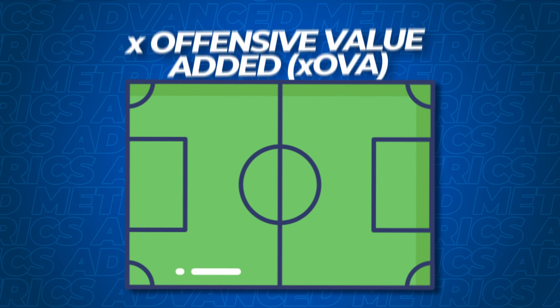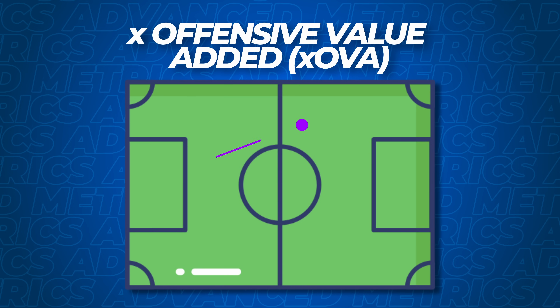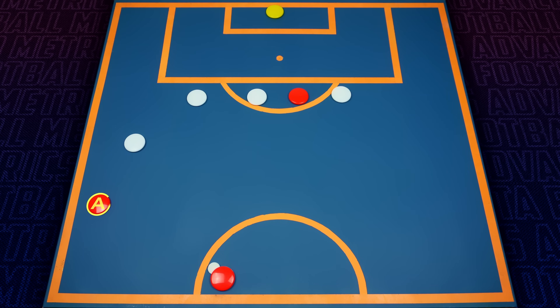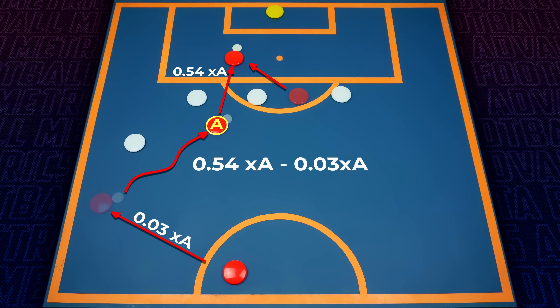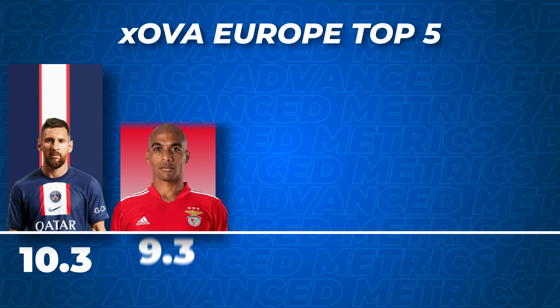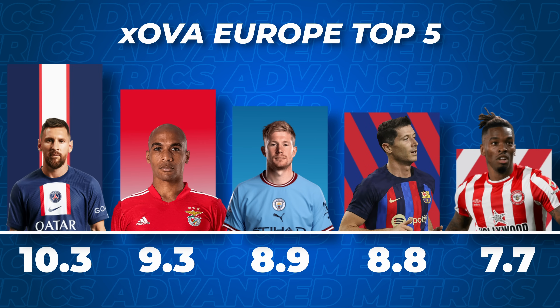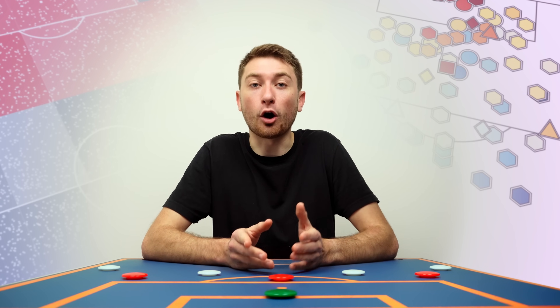Furthermore, a similar metric that highlights a player's ability to increase the likelihood of scoring is expected offensive value added (XOVA). Players that receive passes with low expected assist value and convert these into either higher value expected assists or expected goals are given a positive XOVA score. For example, suppose player A receives a pass with an XA of 0.03, then dribbles and puts his teammate through on goal with a pass that has an XA of 0.54. This net increase is given to player A, who increased the chances of scoring by 0.51. This metric is usually dominated by playmakers, wingers and strikers, and gives us more information on which players directly create the most goal-scoring opportunities for their team.